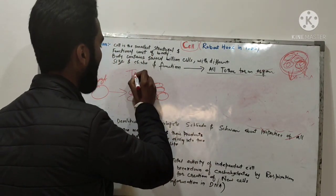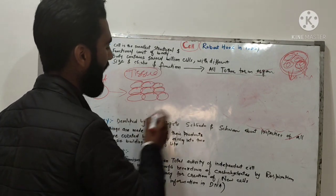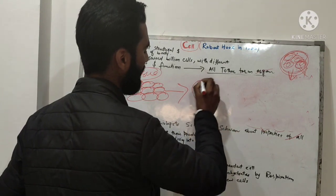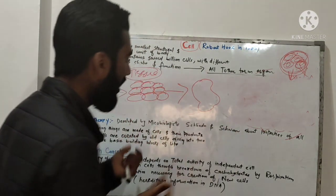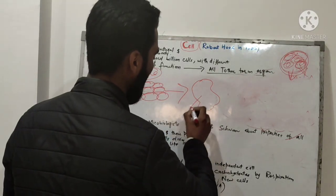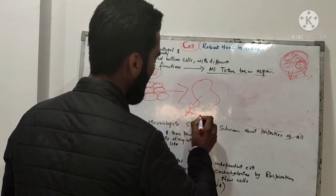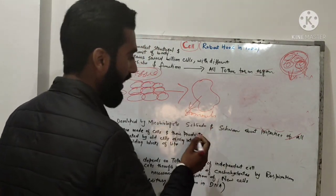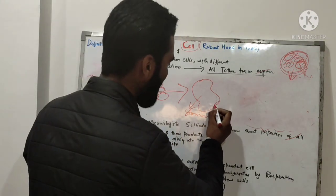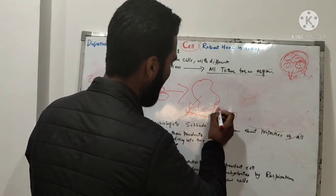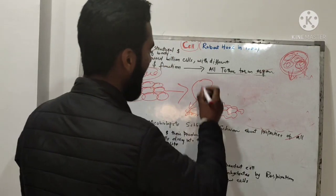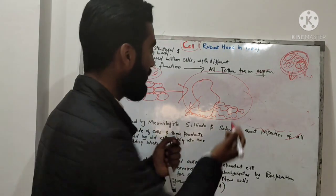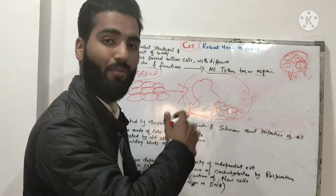When cells are collected together, they create tissue. When tissue forms, it creates an organ. For example, this is a stomach — when cells come together to form a stomach, it becomes an organ. When organs group together, they become an organ system. For example, the stomach together with the small intestine forms the digestive system, which is part of the entire body.